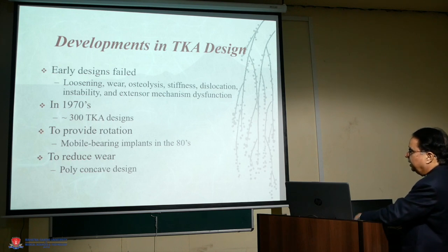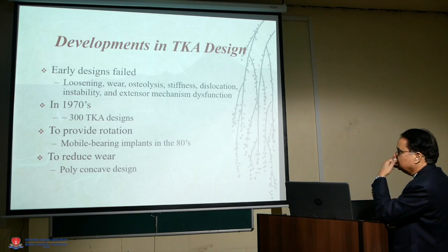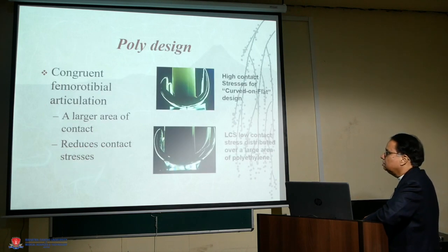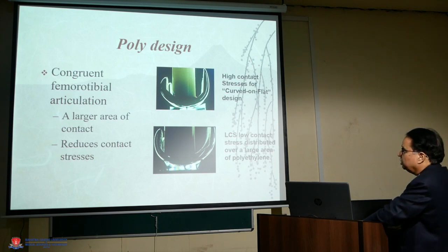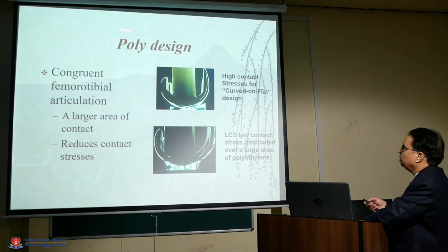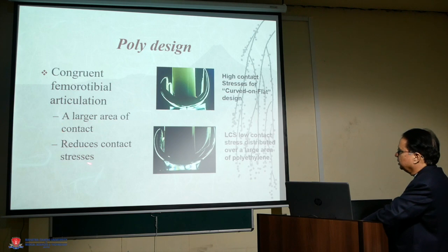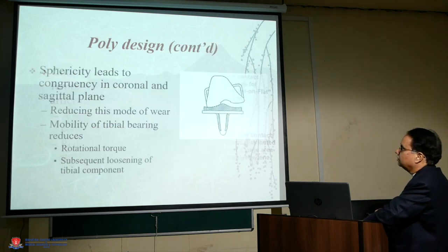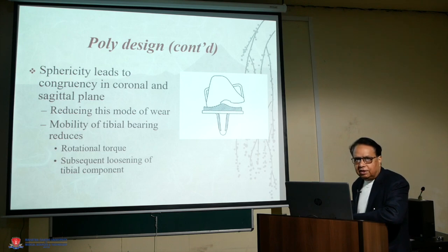The development of TKA, as already discussed, saw around 300 TKA designs by 1970, with the aim of providing better mobility and reducing wear and tear. You can see the photographs showing conglomerate femoral-tibial articulation with a large area of contact to reduce stress — that was the main goal to redesign things. You can see the LCS, low contact stress, among further developments. We will continue this further next time.